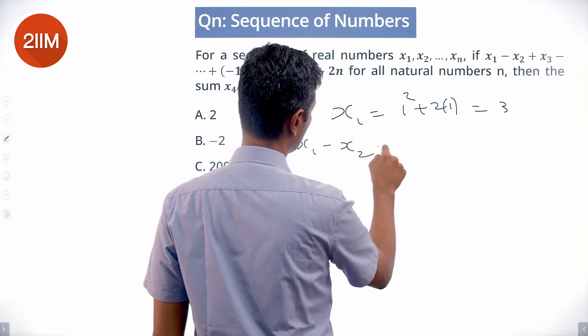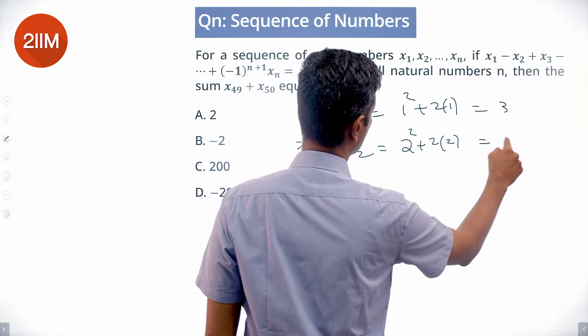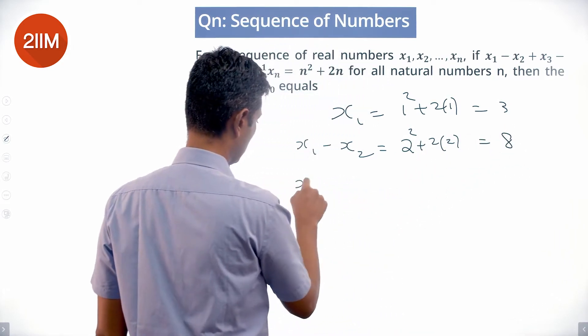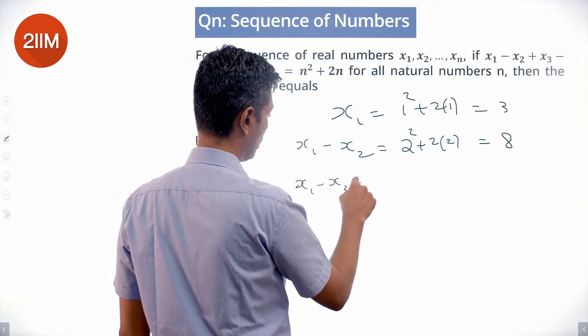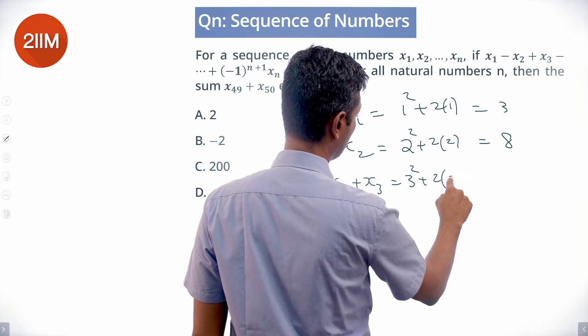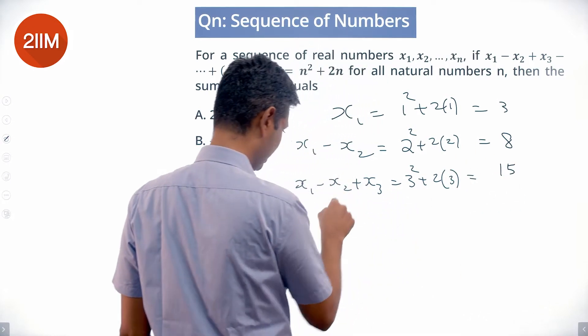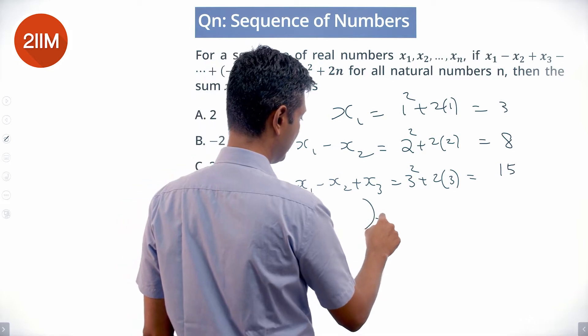Minus x2 is 2 squared plus 2 times 2, which is 8. x1 minus x2 plus x3 is 3 squared plus 2 times 3, which is 9 plus 6, equals 15.